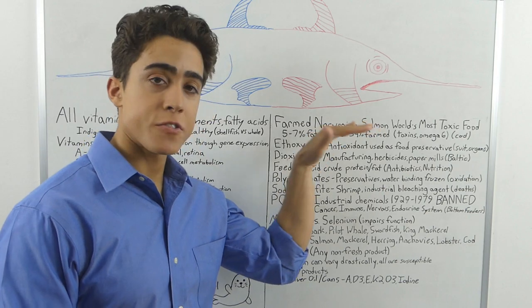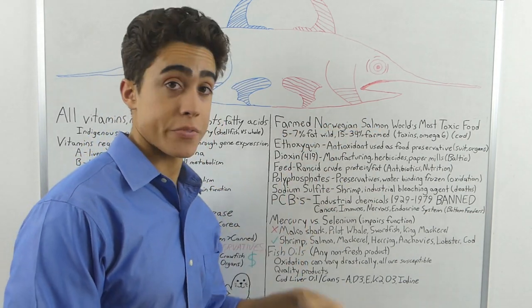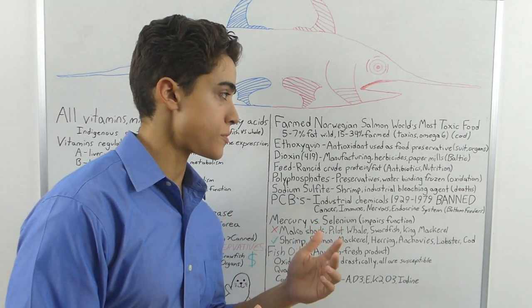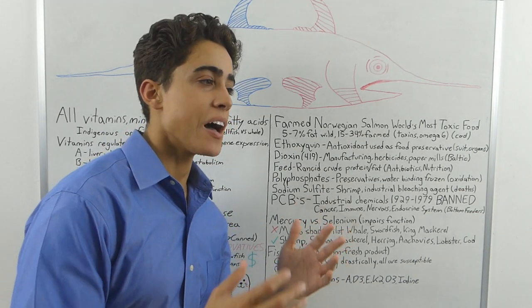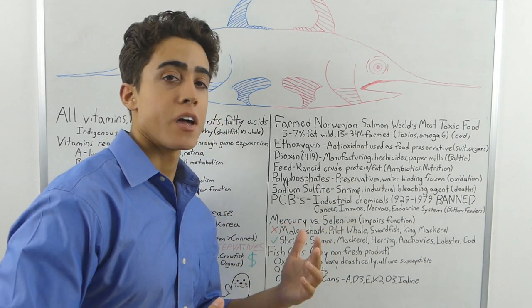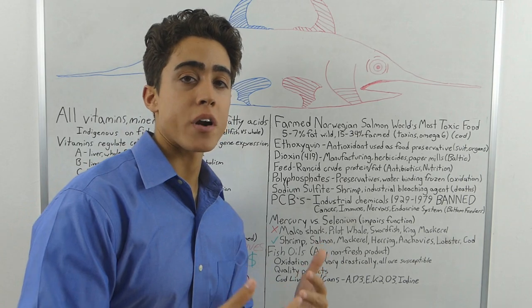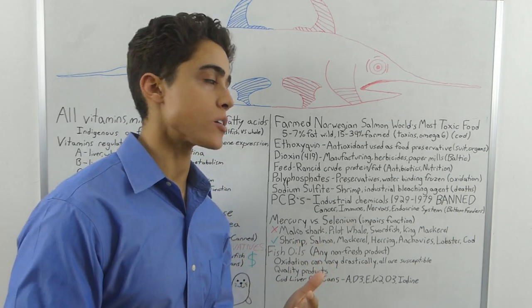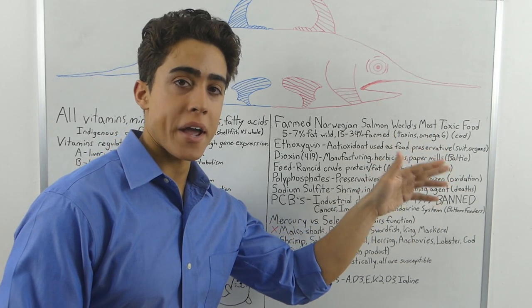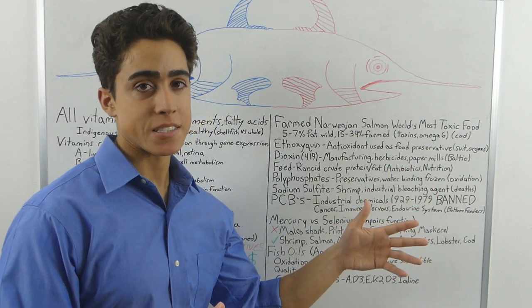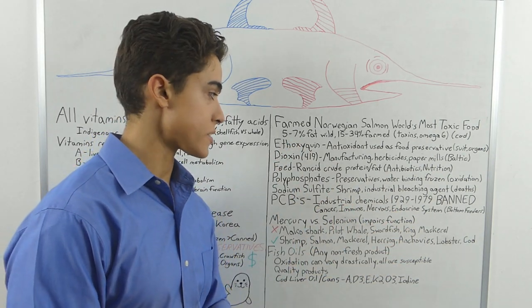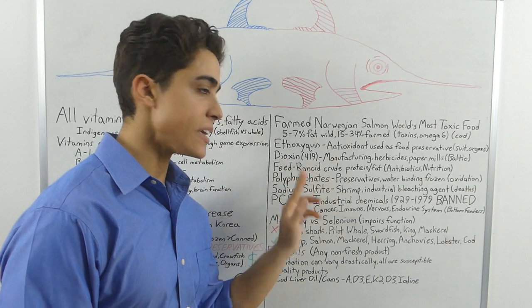The reason fish are toxic is because of these next few things we're going to talk about. Ethoxiquin is an antioxidant used as a food preservative that they put in the fish feed. They need to use this because of how rancid the fats are in the feed. And it's mandatory that you wear a hazmat suit and a respirator while handling this chemical. The chemical damages your liver and kidneys when you consume fish that has it.